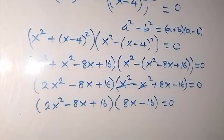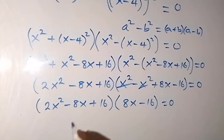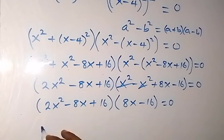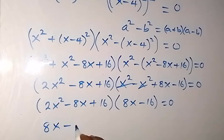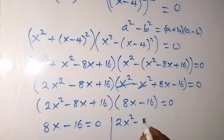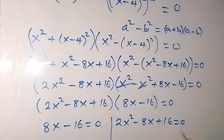From here we have two possible cases. The first is 8x minus 16 equals 0, and on the other side we have 2x squared minus 8x plus 16 equals 0.